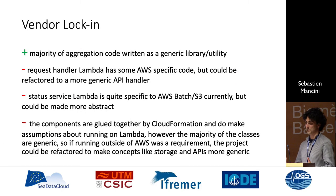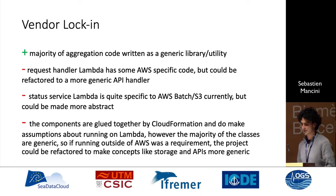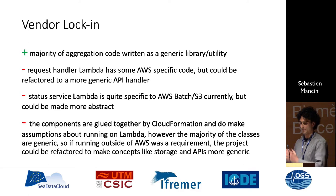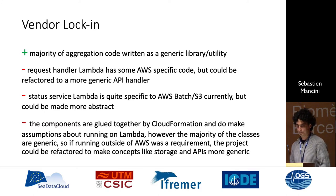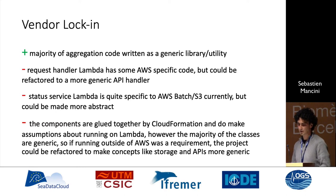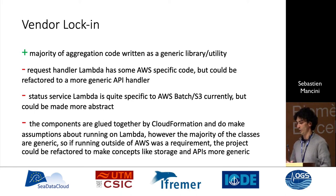Of course, there is the issue of vendor lock-in. We're using AWS, and while the majority of our code is written as a generic library — which is a plus — there are specific things where we are using Lambda and Batch. We could have been a bit more generic in the way we've done that. Some of the components are glued together by CloudFormation, which is an AWS thing, and it would take a bit of work if we wanted to move from AWS to somewhere else. But we don't want to move from AWS at the moment, so the question isn't really being asked.